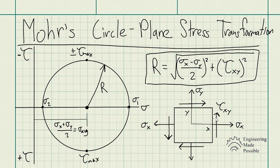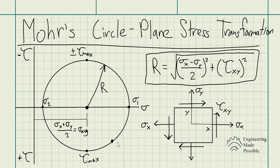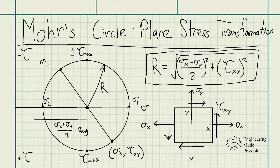Drawing a plane stress element with stresses along the x direction, y direction, and tau xy gives a better idea of how it looks graphically on Mohr's circle. When this element is in its normal state — not rotated — it lies on Mohr's circle. The first point on the circle is sigma x, tau xy, and on the opposite end we have sigma y, negative tau xy.